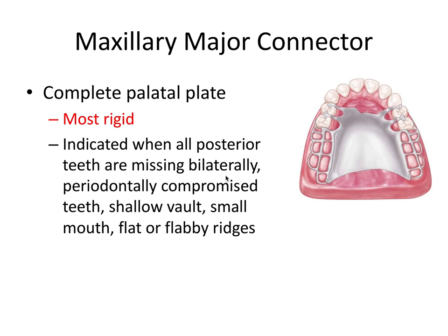Now let's go over some specific designs of these major connectors, starting with maxillary major connectors. The first design is the complete palatal plate, which is the most rigid of all the designs. It's indicated when all posterior teeth are missing bilaterally — classified as Kennedy Class I — also when you have periodontally compromised teeth, a shallow palatal vault, a small mouth, or flat or flabby alveolar ridges. The complete palatal plate is preferable in these cases because it's the most rigid, and again, rigidity is the primary function of the major connector.